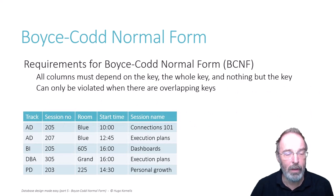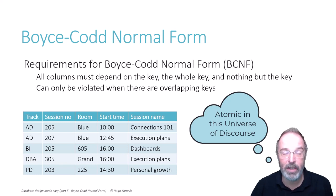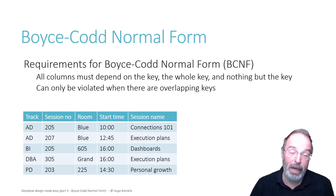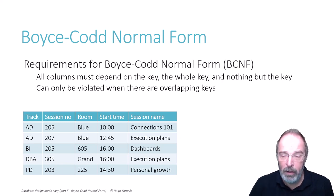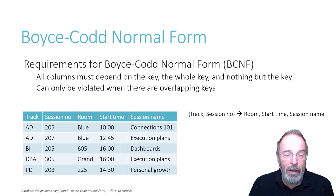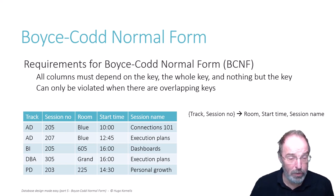So let's look at an example. We are once more scheduling a technical conference. We have sessions identified by the atomic columns track and session number. Each session is scheduled to start at a certain time in a certain room, and of course each session has its own name. Track and session number combined determine the room, the start time, and the session name. That makes sense because track and session number combined identifies a unique session.